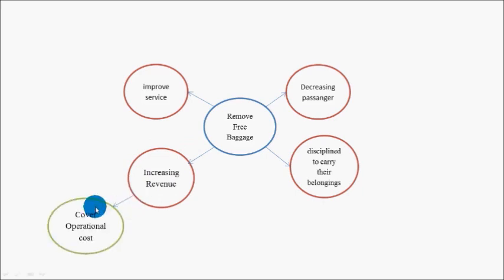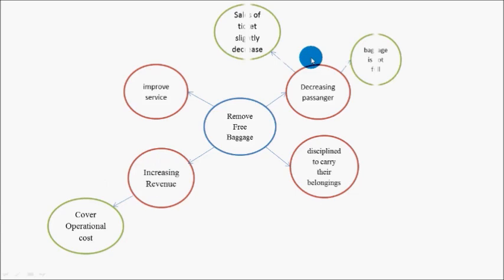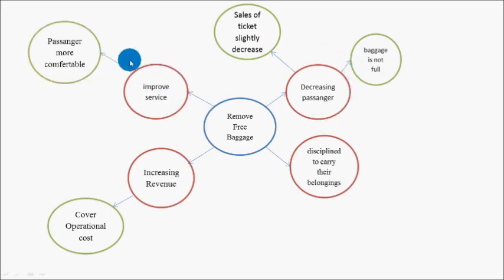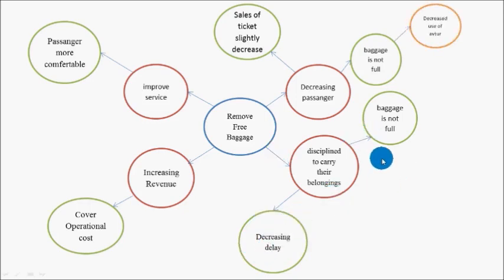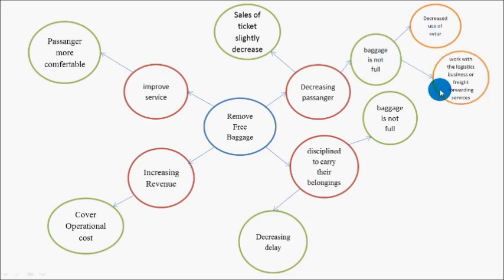Increasing revenue will cover their operational costs. Decreasing passengers will impact ticket sales, likely decreasing, and baggage will not be full anymore. Improved service will make passengers more comfortable. Discipline to carry belongings will impact baggage not being full and a decrease in delays. Then identify the third order consequences, such as decreased delays because baggage is not full, and airlines will be able to work with logistics businesses or freight forwarding services.